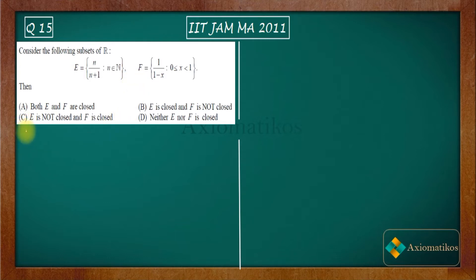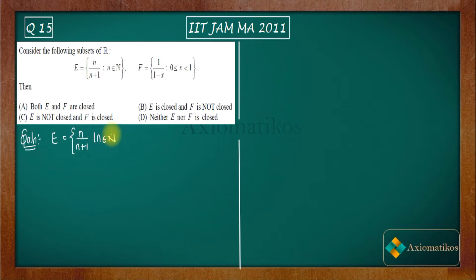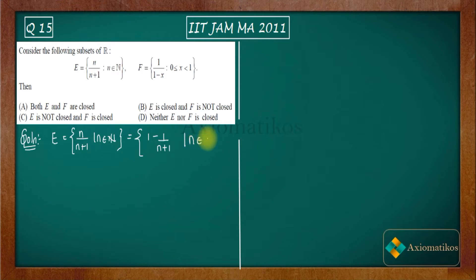We will proceed with E first. Your E set is n/(n+1) such that n belongs to the natural numbers. Now if you add and subtract 1 on the numerator side and simplify by taking LCM, you can rewrite this as 1 minus 1/(n+1). This form will be very helpful for us going forward.